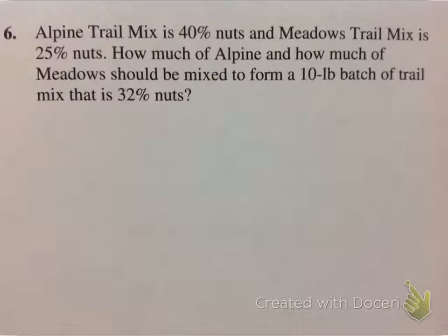In this problem, Alpine trail mix is 40% nuts, and Meadows trail mix is 25% nuts. How much of Alpine and how much of Meadows should be mixed to form a 10-pound batch of trail mix that is 32% nuts? So there's two different types of numbers happening in this problem. We have percents, and we have pounds. Most of our numbers are dealing with percents, but we do have the 10-pound batch of trail mix. We're going to write two equations, one that represents pounds,